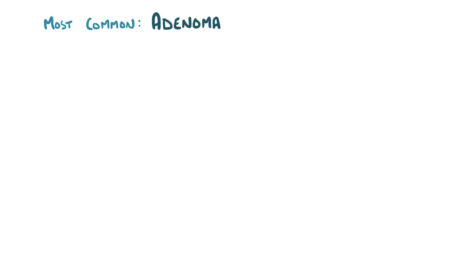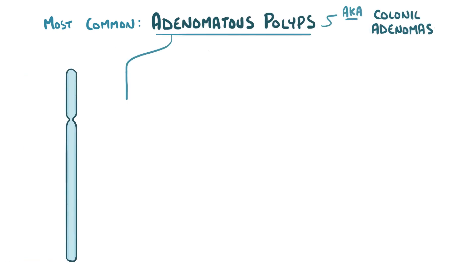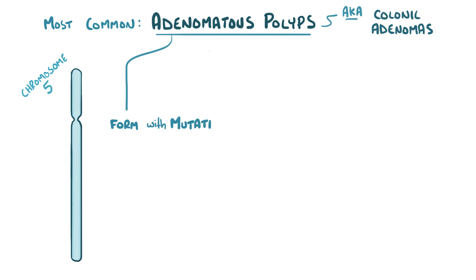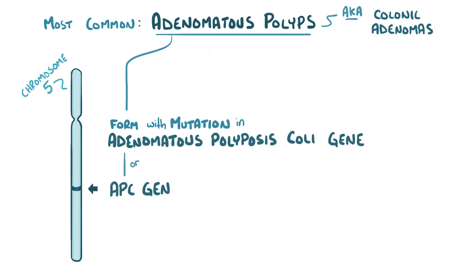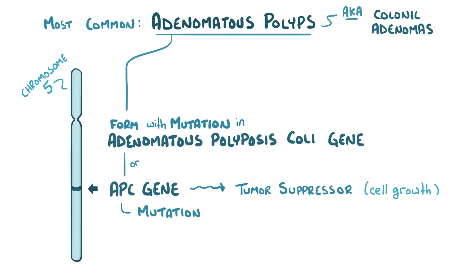There are various types of colorectal polyps. The most common ones are adenomatous polyps, also called colonic adenomas, and these form when there's a mutation in the adenomatous polyposis coli gene, or APC gene, which is a tumor suppressor gene that regulates cell growth. When the APC gene is mutated, the epithelial cells start to quickly divide, which forms polyps.